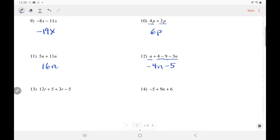Number 13. So, we add 12r and 3r. That would be 15r. And then, positive 5 and a negative 5. They knock each other out. It's 0, which we don't have to write.